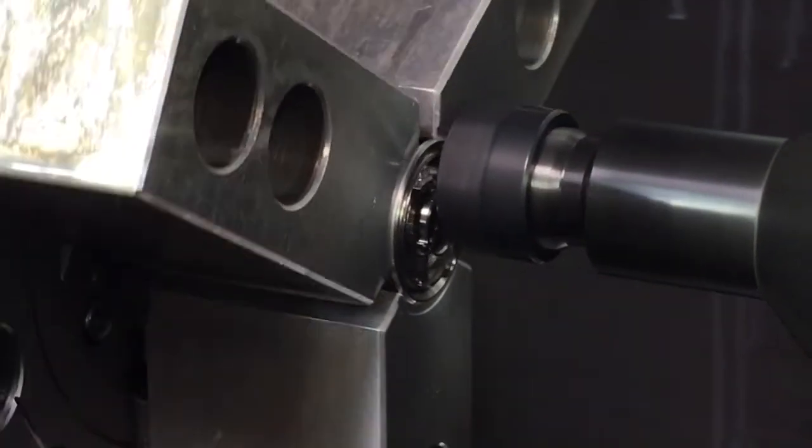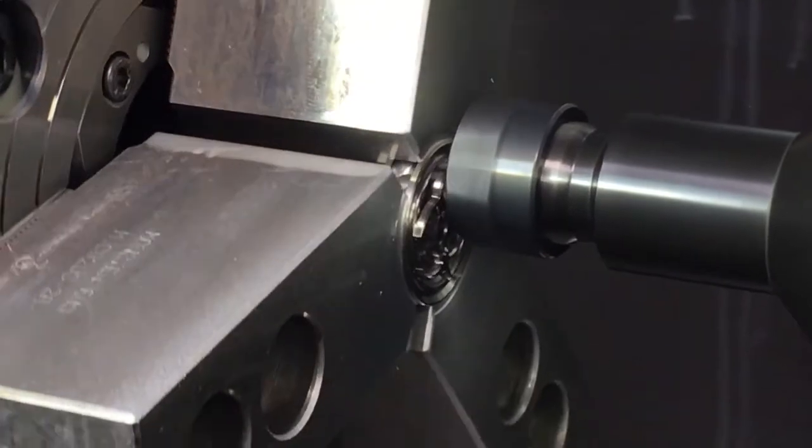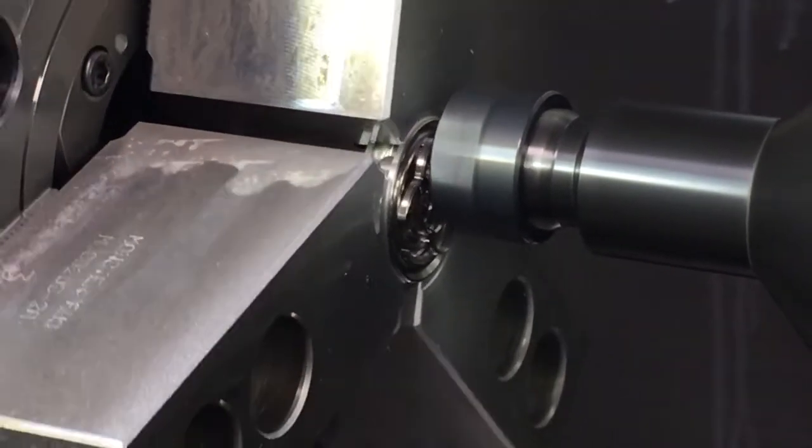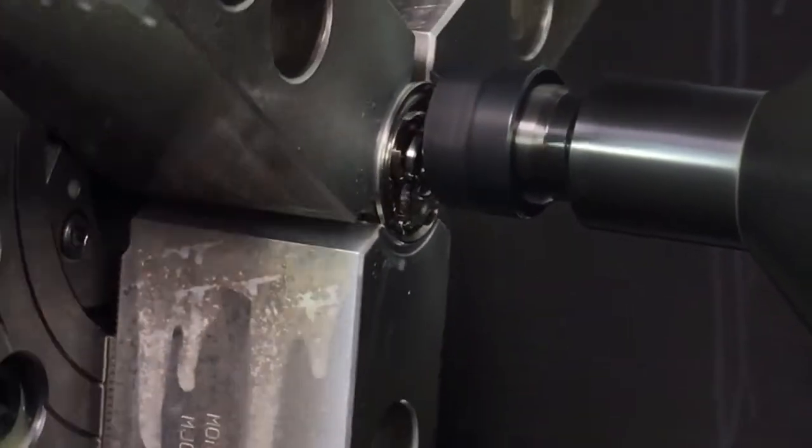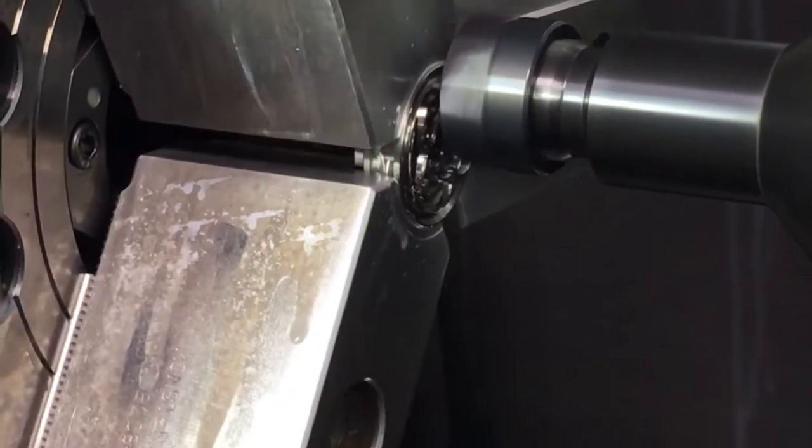So that little tool going around there is called an end mill and that's cutting out the pattern. That's spinning really fast and it's able to cut on its side. It's like a drill bit that you can cut tightly with.